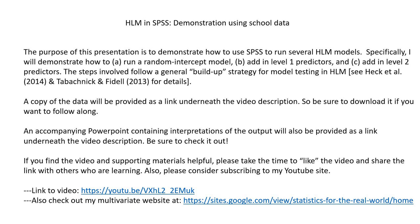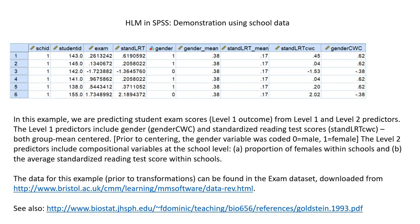In this example, we are predicting student exam scores, which is our level 1 outcome, from level 1 and level 2 predictors. The level 1 predictors include gender and standardized reading test scores, both of which are group mean-centered. Prior to centering, the gender variable was coded 0 for male, 1 for female.